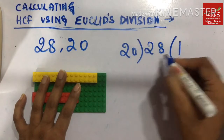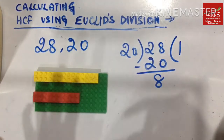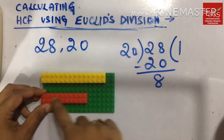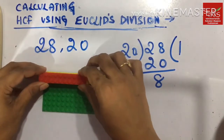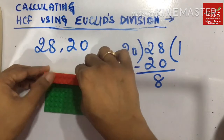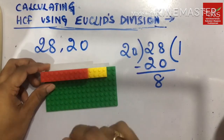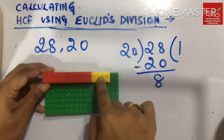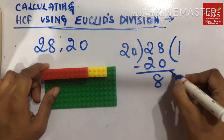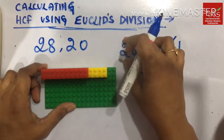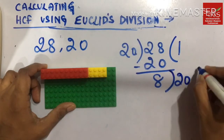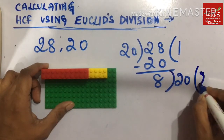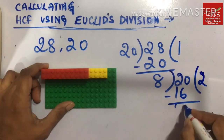So 20 times 1 is 20, and my remainder is 8 dots. This is my 28 block and this is my 20. I will place the 20 block upon the 28. I have used one 20-block, so 20 times 1 is 20, and my remainder is 8 dots. Now what we are trying to do is make the previous divisor our new dividend and divide with 8. 8 ones is 8, 8 twos is 16, and our remainder is 4.